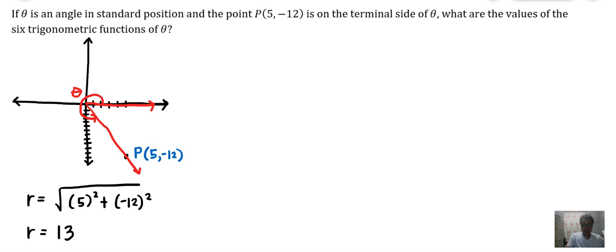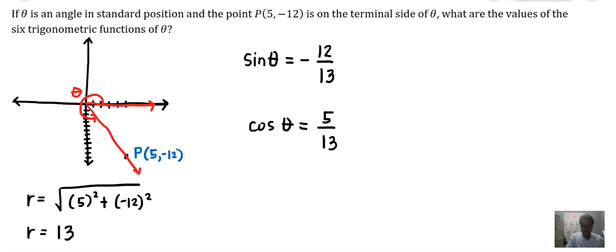Let us now write the six trigonometric functions of theta. Sine of theta is Y over R, so Y is negative 12 and R is 13 — that gives negative 12 over 13. Cosine of theta is X over R, so this is positive 5 over 13. Tangent of theta is Y over X, so negative 12 over 5 — it's negative because Y is negative.